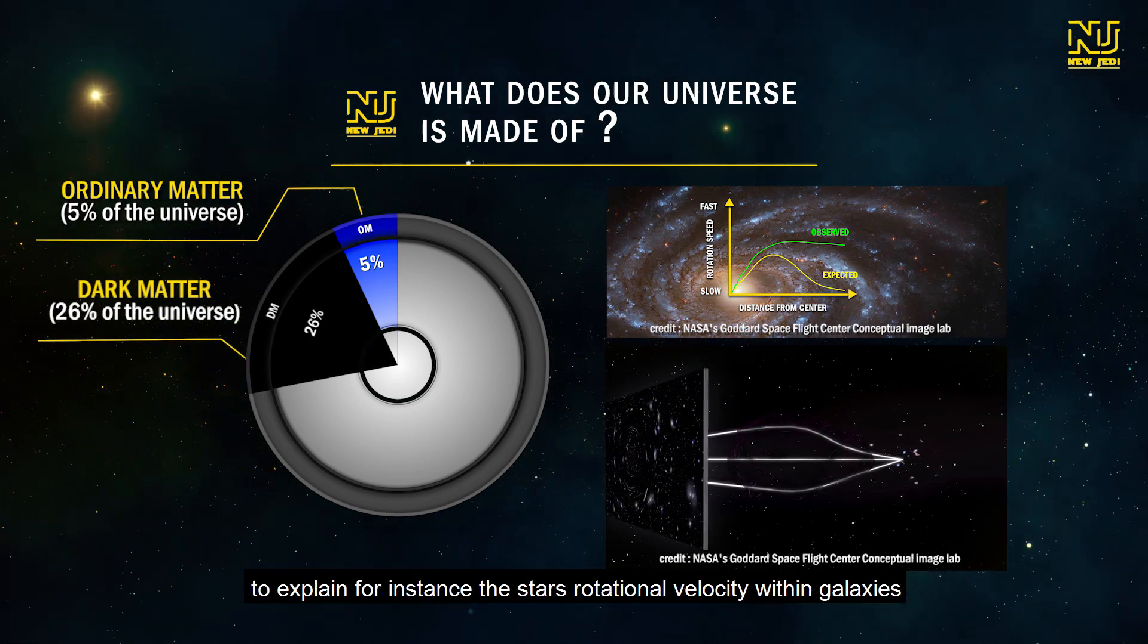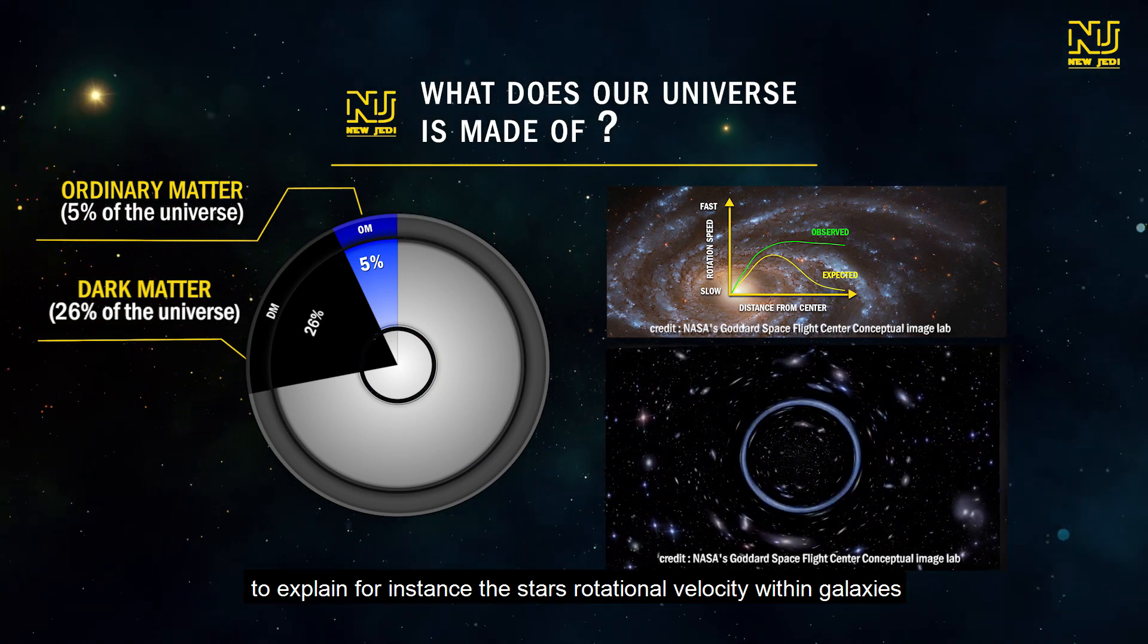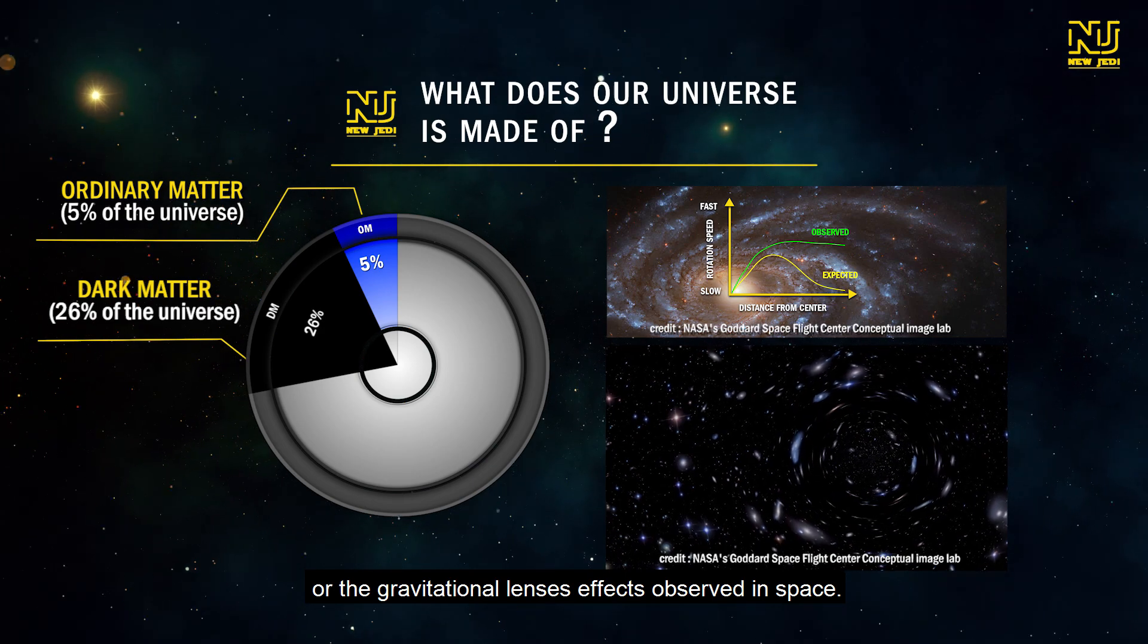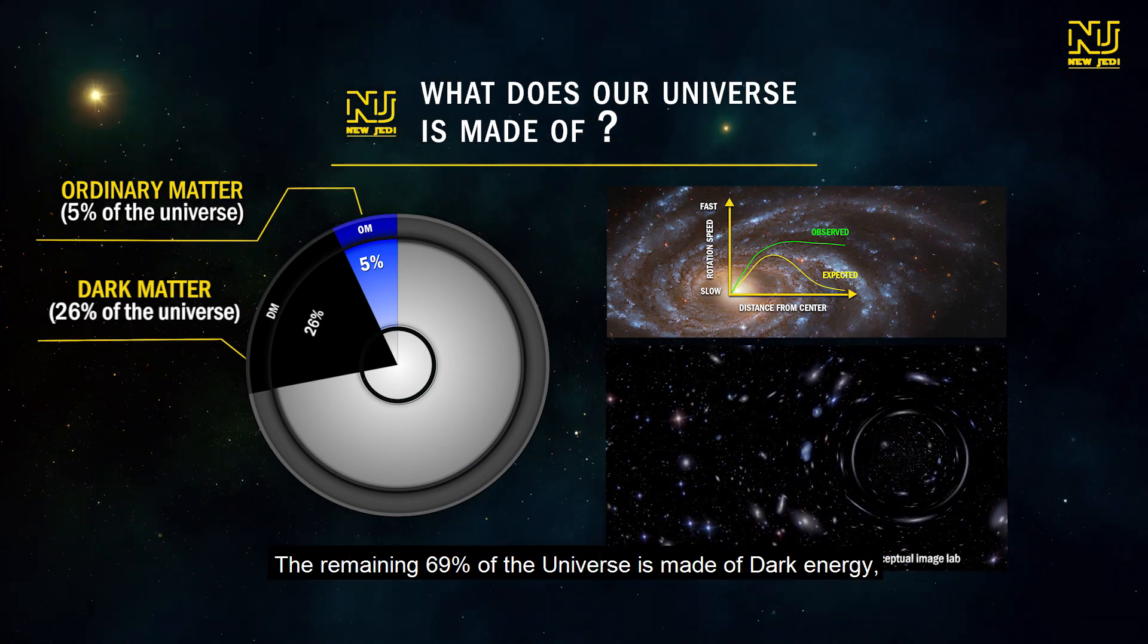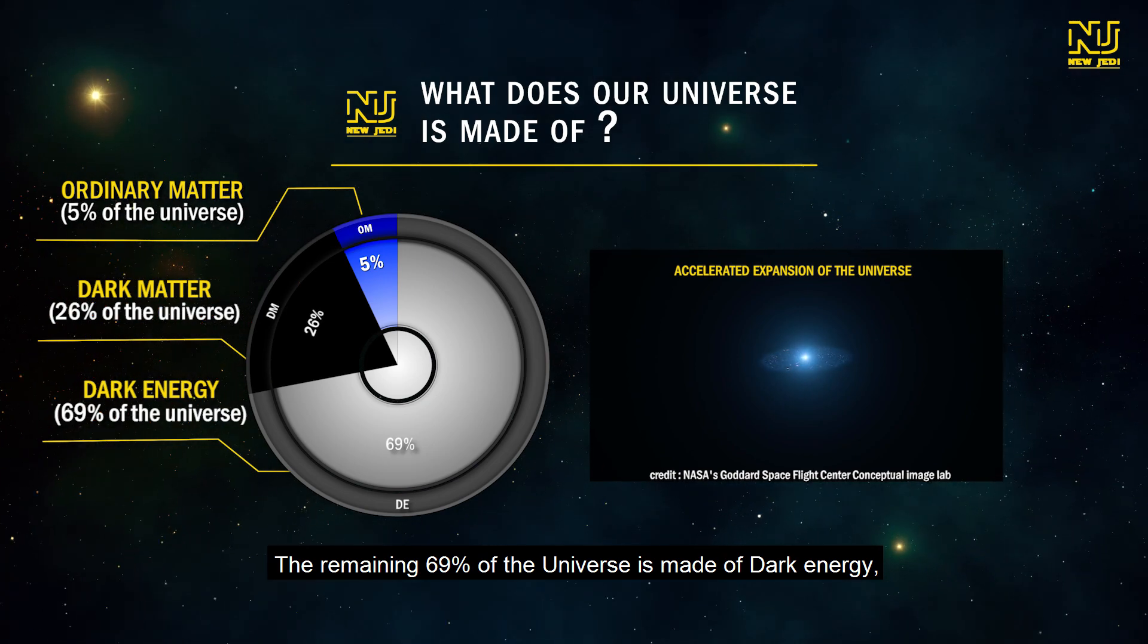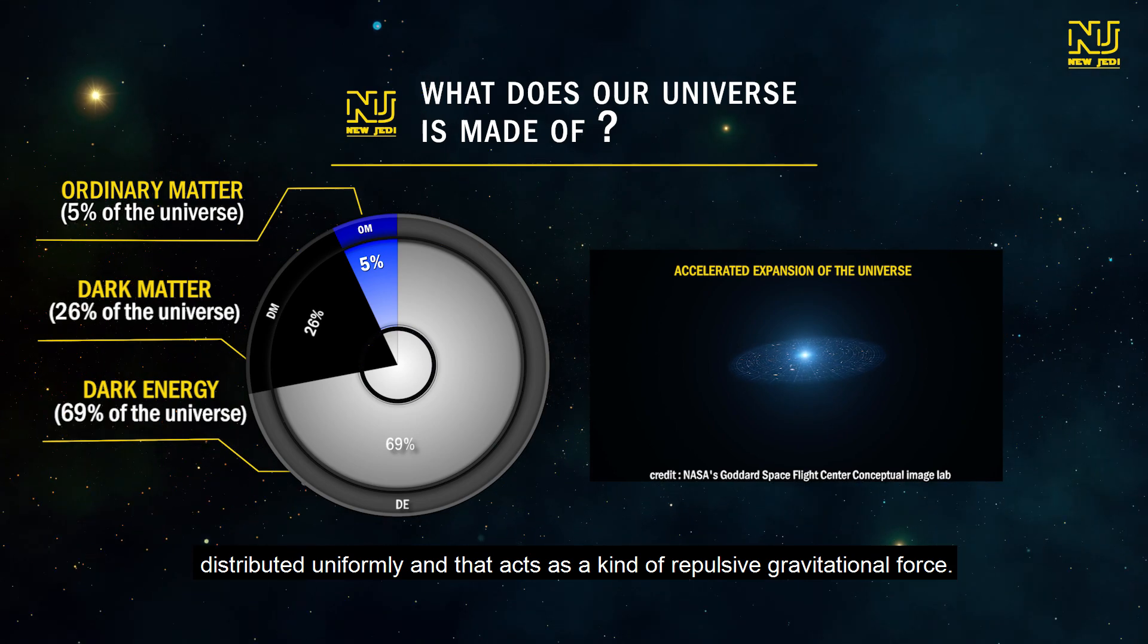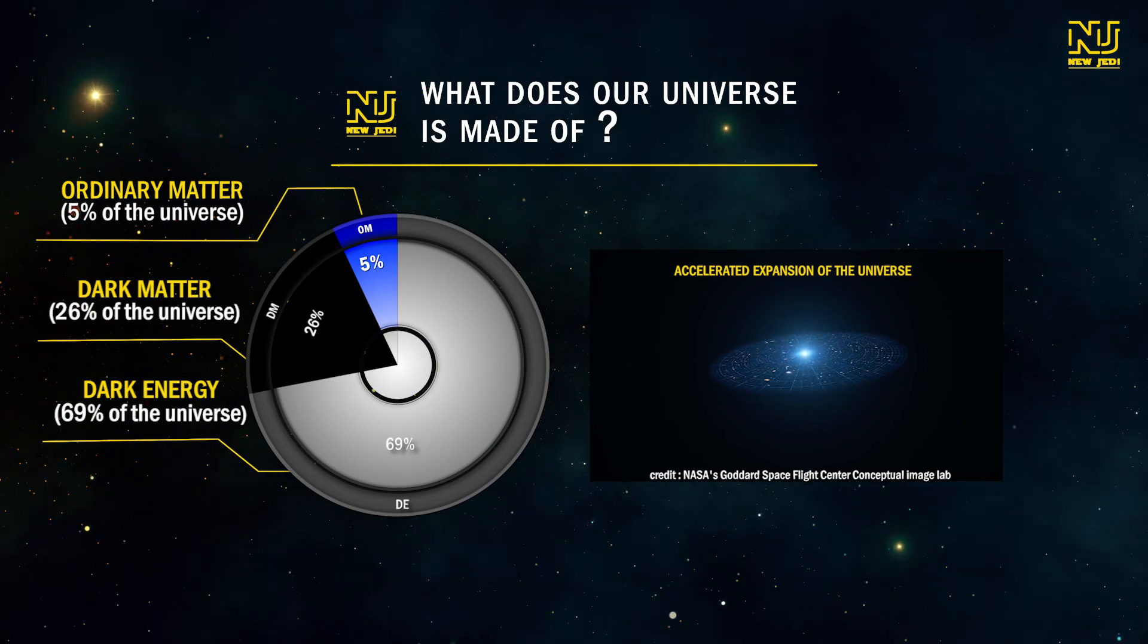26% are made of dark matter that does not emit light, and whose existence has been introduced to explain, for instance, the stars' rotational velocity within galaxies, or the gravitational lenses' effects observed in space. The remaining 69% of the universe is made of dark energy, distributed uniformly, and that acts as a kind of repulsive gravitational force.